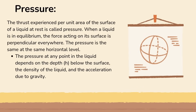Next is pressure. The thrust experienced per unit area of the surface of a liquid at rest is called pressure. When a liquid is in equilibrium, the force acting on its surface is perpendicular everywhere. The pressure is the same at the same horizontal level. The pressure at any point in the liquid depends on the depth h below the surface, the density of the liquid, and the acceleration due to gravity.